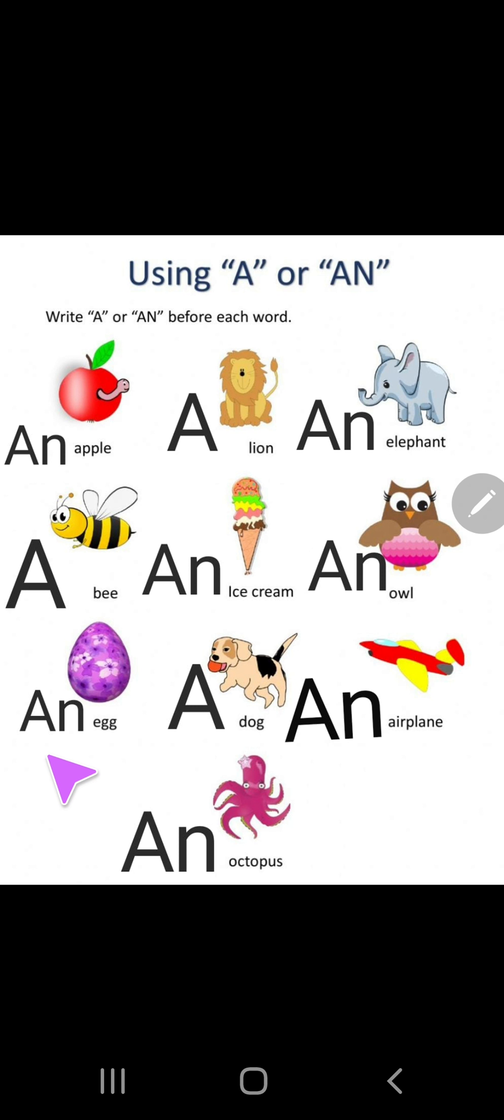Egg. E-G-G. So E is the vowel. We use an. Now dog. D-O-G. So we use a because D is the consonant.